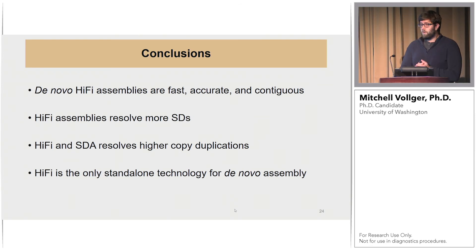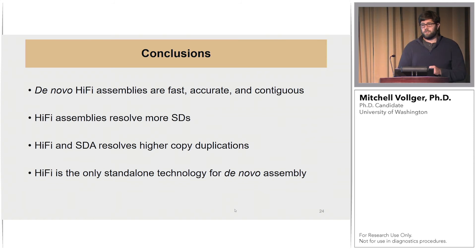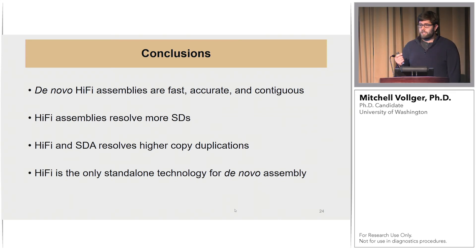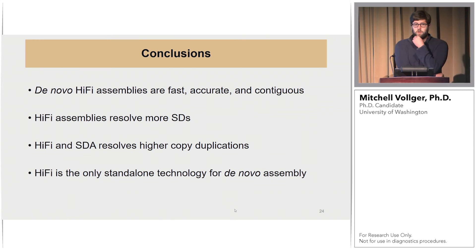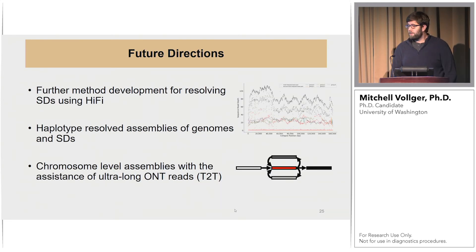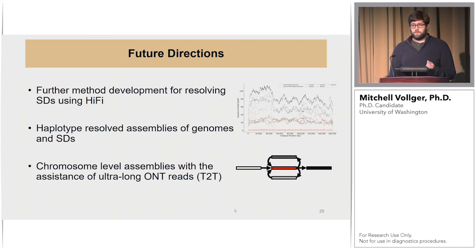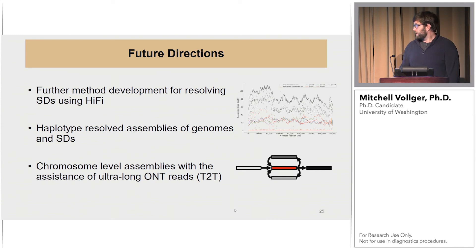In conclusion: de novo HiFi assemblies are fast, accurate, and contiguous — with special emphasis on fast, as they are far easier to work with than CLR assemblies. HiFi assemblies resolve significantly more segmental duplications, and with SDA we can resolve some of the highest copy number segmental duplications in the genome. HiFi is the only stand-alone technology for de novo assembly without Illumina polishing. Future directions include algorithmic improvements for HiFi in SD space, haplotype-resolved assemblies of segmental duplications, and continuing to assist the T2T consortium.